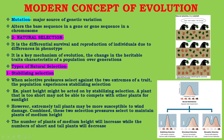Number one is stabilizing selection. When selective pressures select against the two extremes of a trait, the population experiences stabilizing selection. For example, plant height might be acted on by stabilizing selection: a plant that is too short may not be able to compete with other plants for sunlight, however an extremely tall plant may be more susceptible to wind damage. These two selection pressures combine to maintain plants of medium height, so the number of medium-height plants will increase while the number of short and tall plants will decrease.